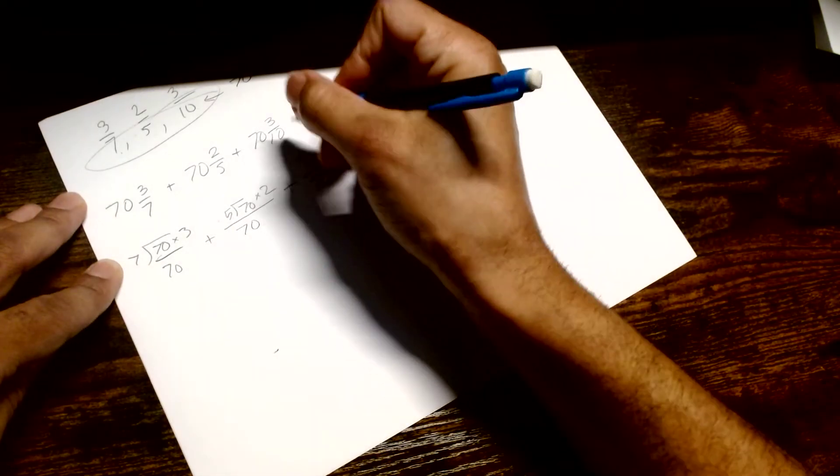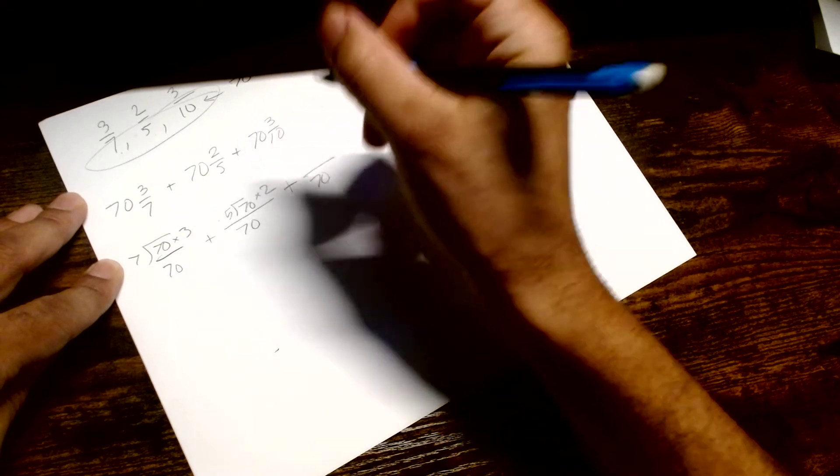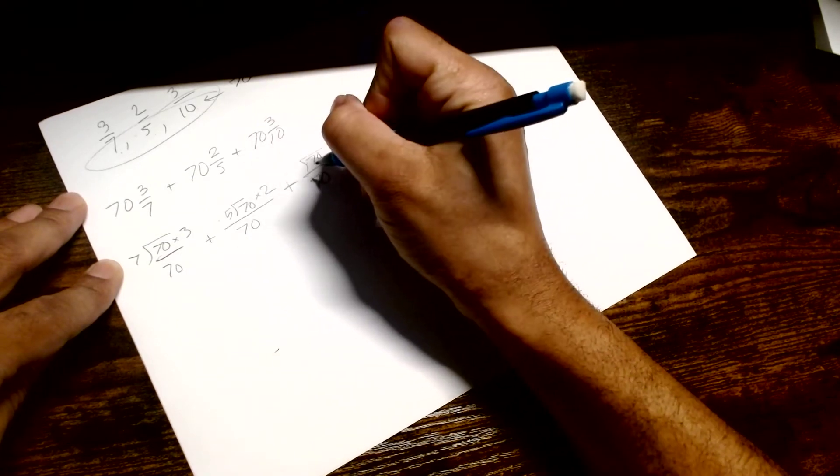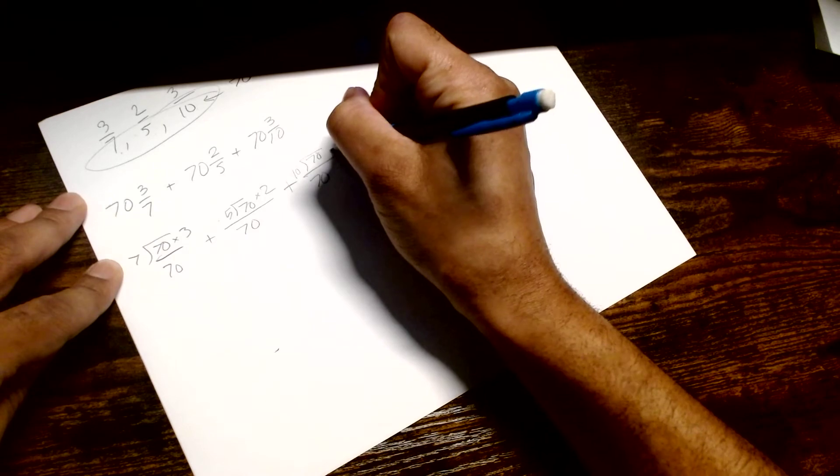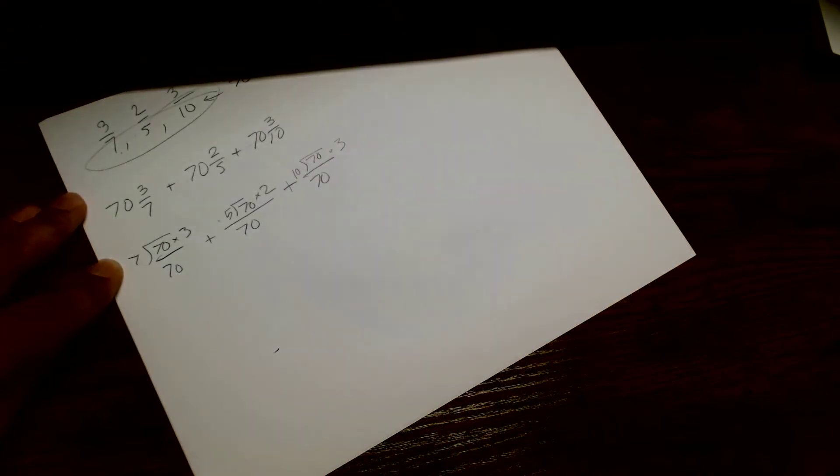So we're going to have this 70 down here on the bottom. LCD down there. And what's that? That's a 10 and 70. So we have 70 divided by 10. And we're going to multiply that by what? That three that was up there.